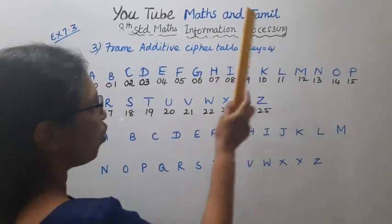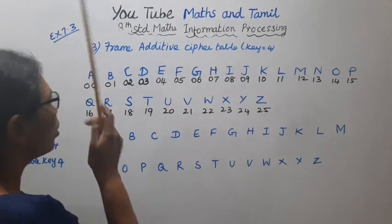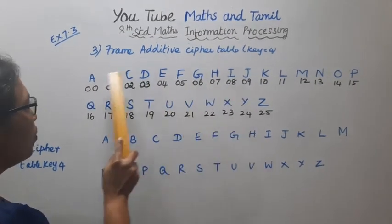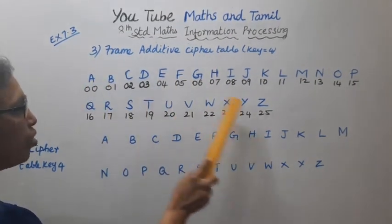The key for this cipher is Key 4. Additive Cipher Table, A to Z.